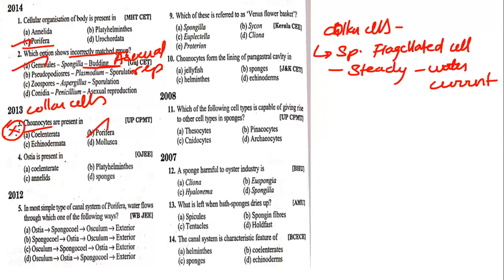Ostia is present in sponges only, because ostia is the pore present only in Porifera. These are the smallest and most numerous types of pores, spread throughout the body. It also has an excurrent aperture.